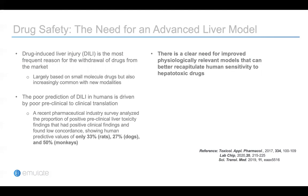That is, animal studies fail to predict human response. A recent pharmaceutical industry survey showed low concordance between human and animals — specifically only 33% for rats, 27% for dogs, and 50% for monkeys. Therefore, there is a clear need for a next-generation human-based in vitro model that can better recapitulate human response to drugs.